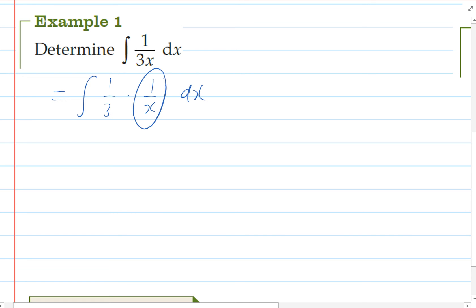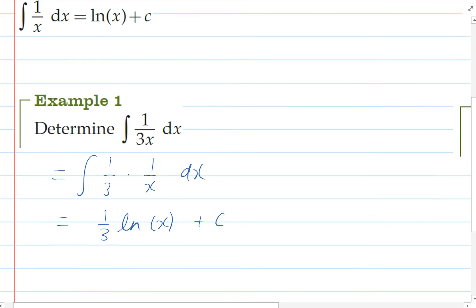Simply because this thing here I know what it integrates to, and since this is a constant, it won't affect my integration. So that means our integral is simply going to be 1 over 3 natural log of x. And the only thing we need to make sure we remember is the constant of integration.